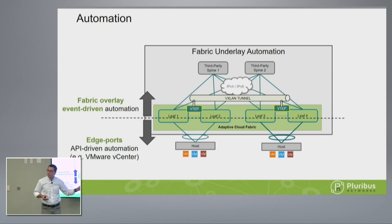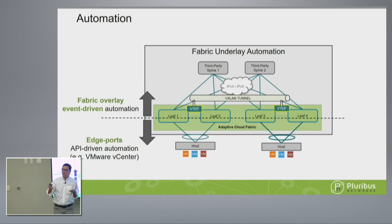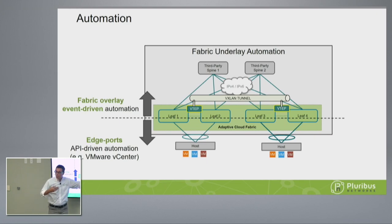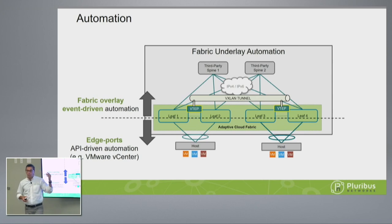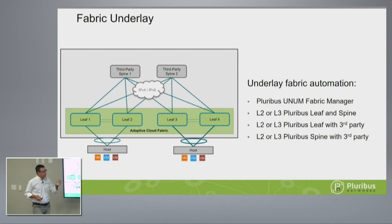We provision the overlay network on top. The underlay I consider a day-one operation to stand up, but then there's a level of dynamicity — when you provision your workloads and applications, you need the overlay capable of reacting. It's an event-driven automation on the underlay. Now let me look at these three types of automation. Steve alluded to this tool we built — it's a fabric manager called Unum, or Pluribus Unum fabric manager.